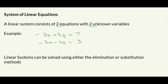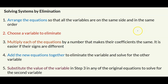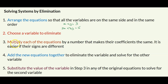To solve systems by elimination, first arrange the equations so the variables are on the same side and in the same order — something like x + y = 3 and 2x + 3y = 5. Then choose a variable to eliminate. To do that, multiply each equation by a number that makes the coefficients of the chosen variable equal.